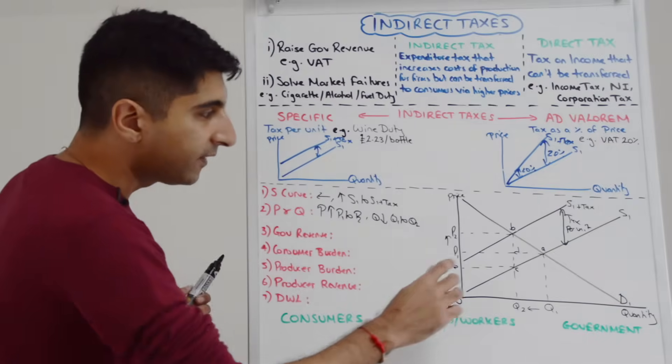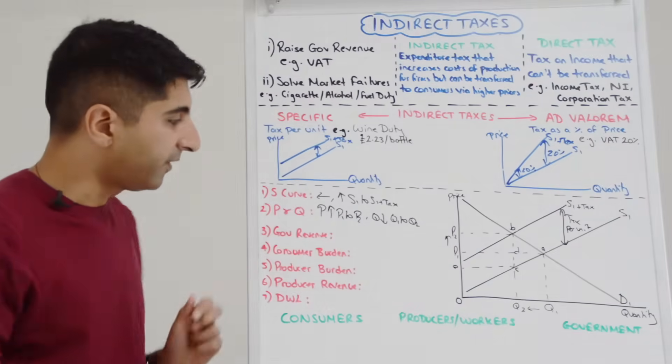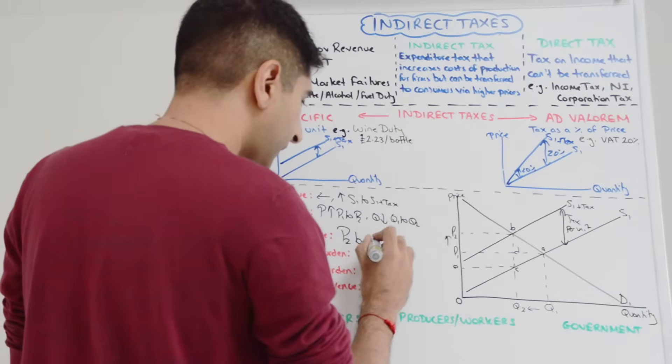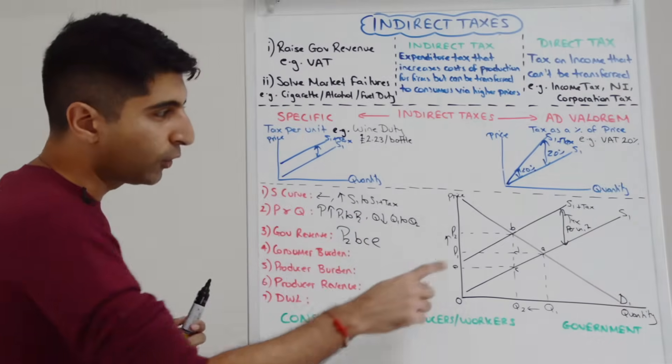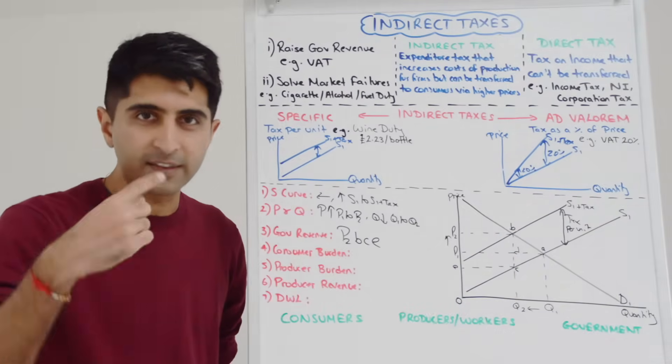That's all the units up to Q2. So BC multiplied by everything up to Q2. If I label this point here E, I'm going to put a label D there, so we can see that P2BCE, that area represents the total government revenue, P2BCE.